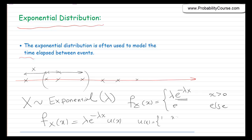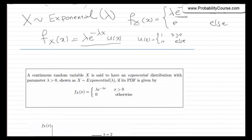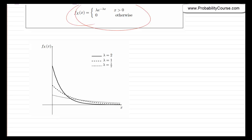So u of x is 1 for positive values of x and 0 otherwise — it's just a simple notation. This is the definition and the PDF of the exponential random variable. This graph shows the PDF for some different values of lambda: this is lambda equals 2, this is lambda equals 1, and this is lambda equals one half. As you can see, the function decays exponentially as x becomes larger.